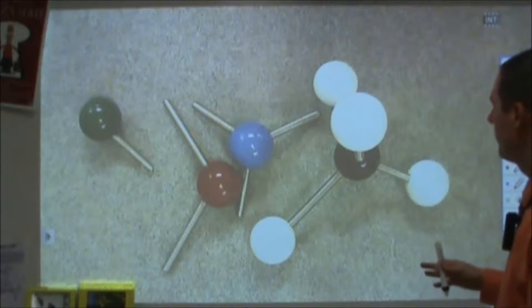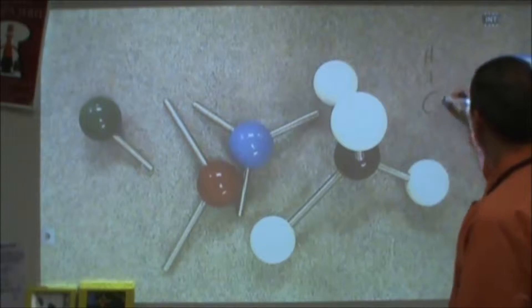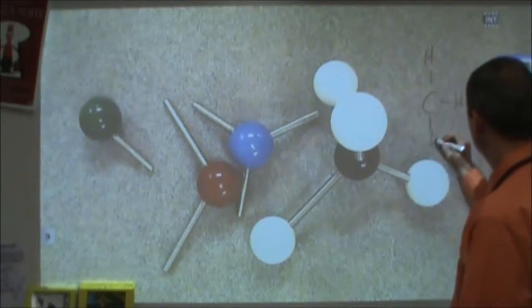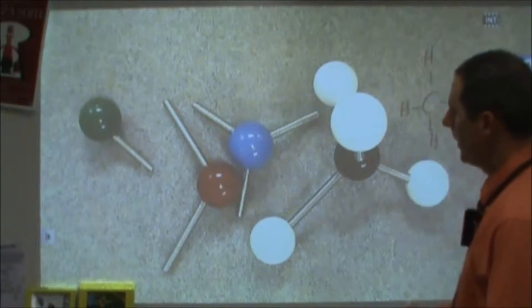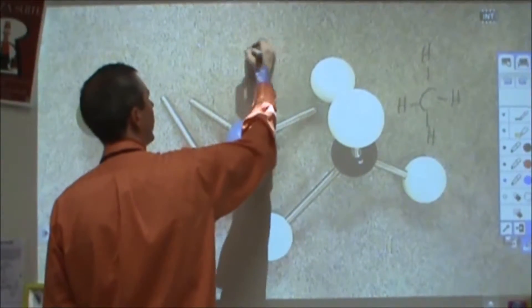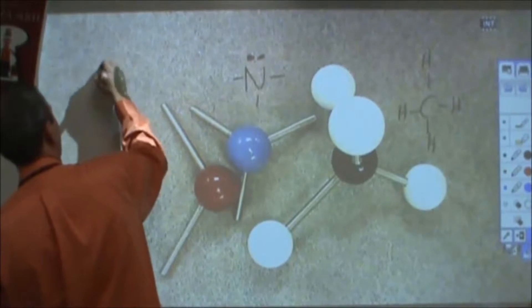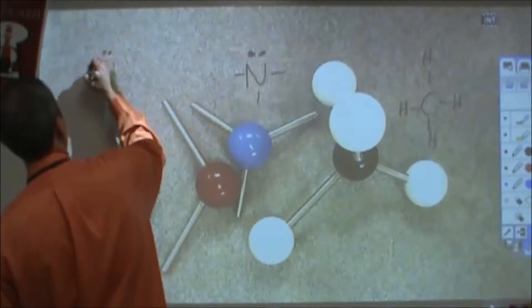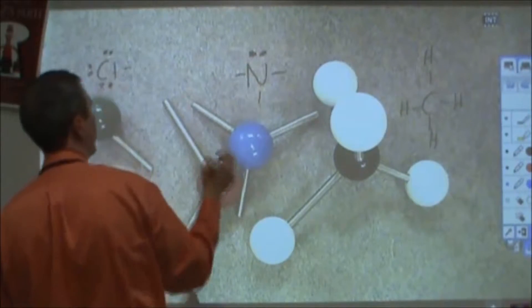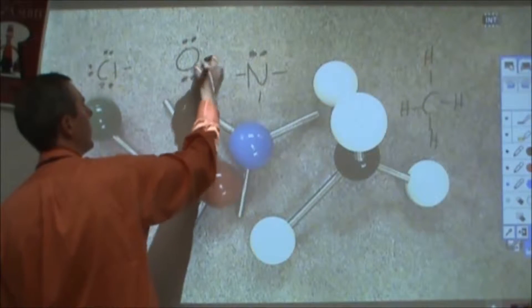So here I've got just a sampling from the model kit that I have. I've got a methane with a carbon with four hydrogens attached, and then I've got a nitrogen which has a lone pair but then it has three bonding sites, and then I've got a halogen, let's call it chlorine, with three lone pairs, one bonding site, and then an oxygen with two lone pairs and two bonding sites.